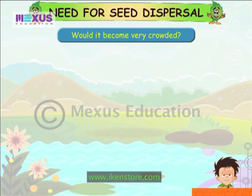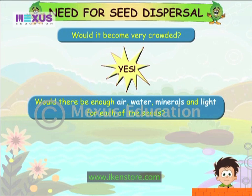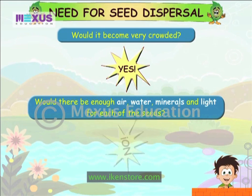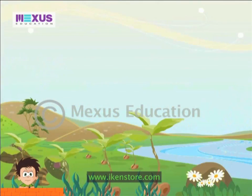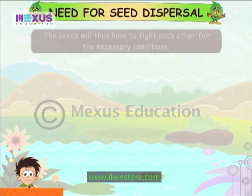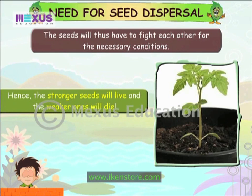Need for seed dispersal. Would it become very crowded? Yes! Would there be enough air, water, minerals and light for each of these seeds? No! The seeds will thus have to fight each other for the necessary conditions. Hence, the stronger seeds will live and the weaker ones will die.